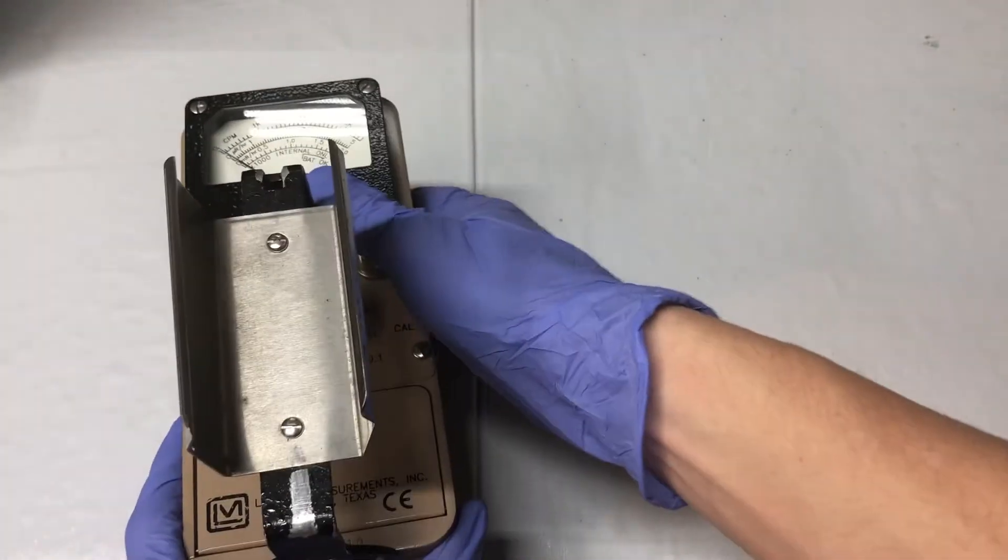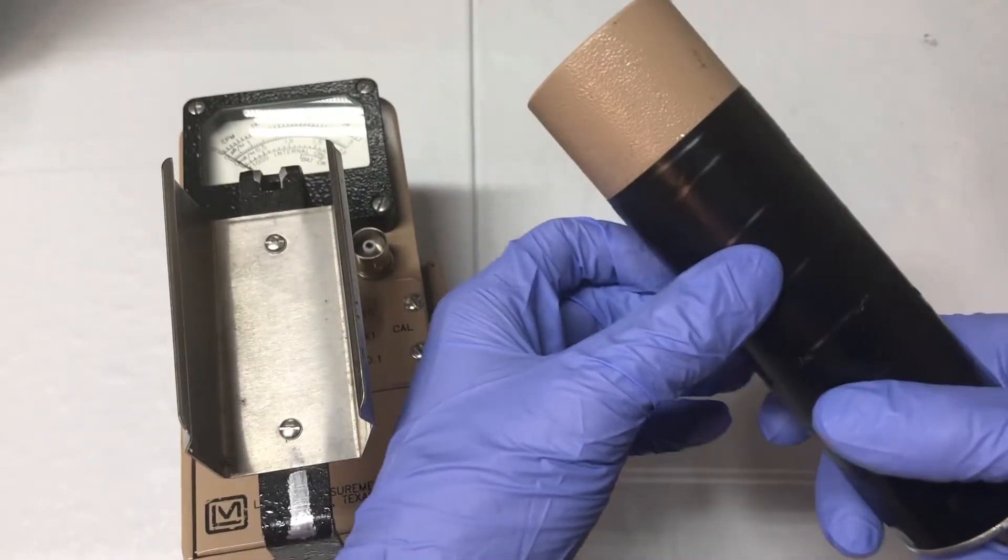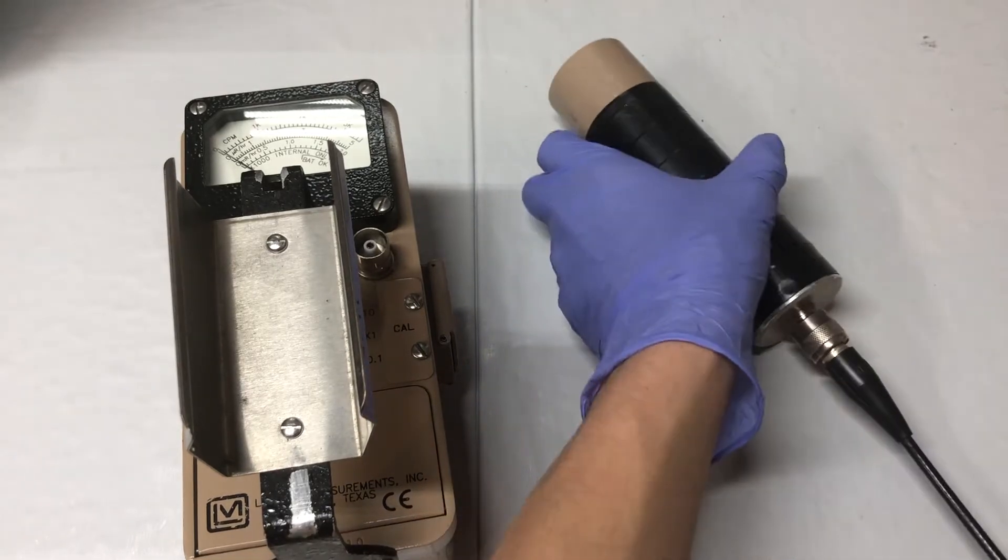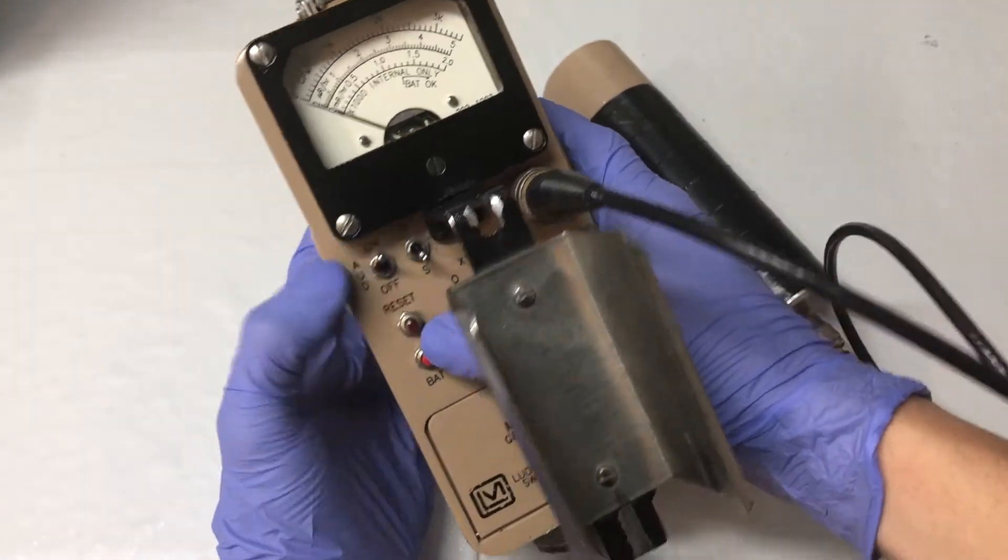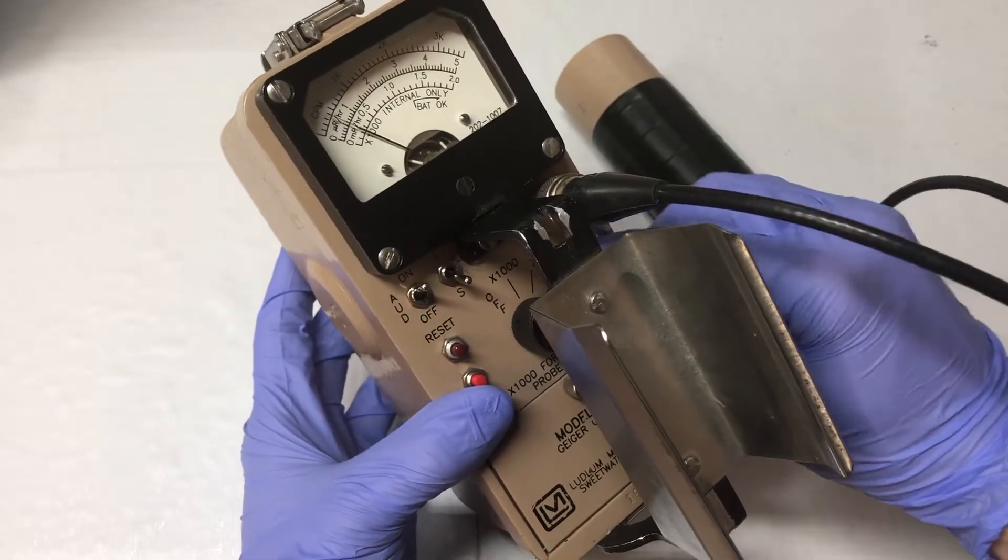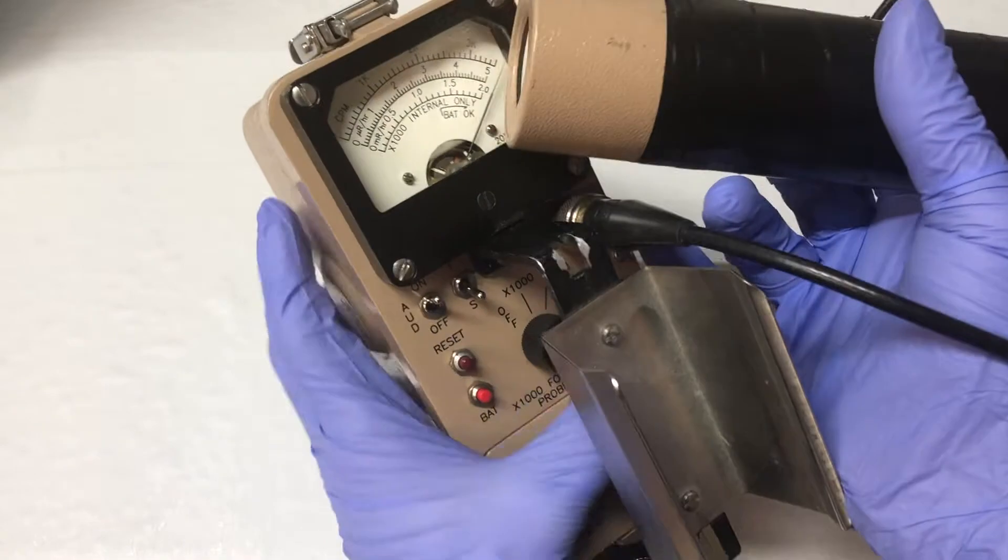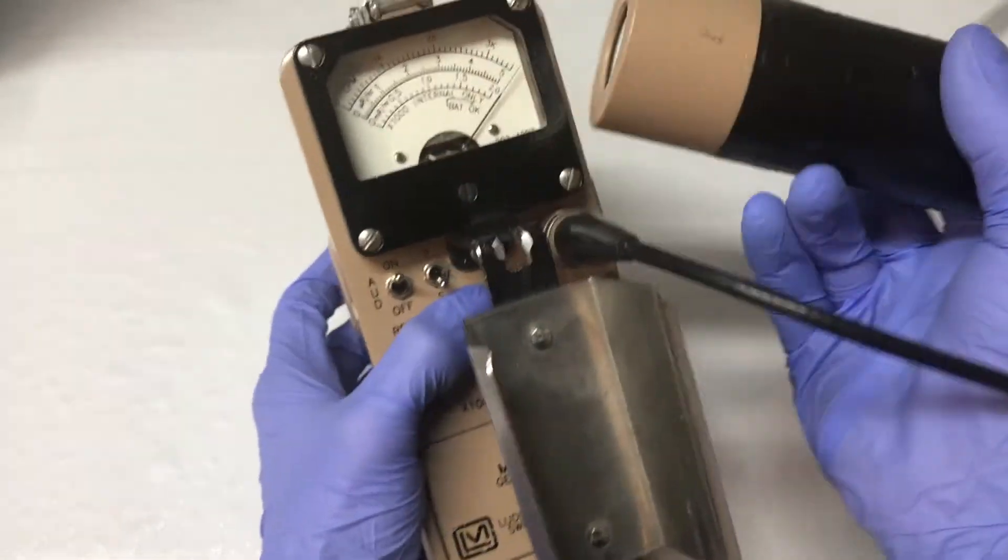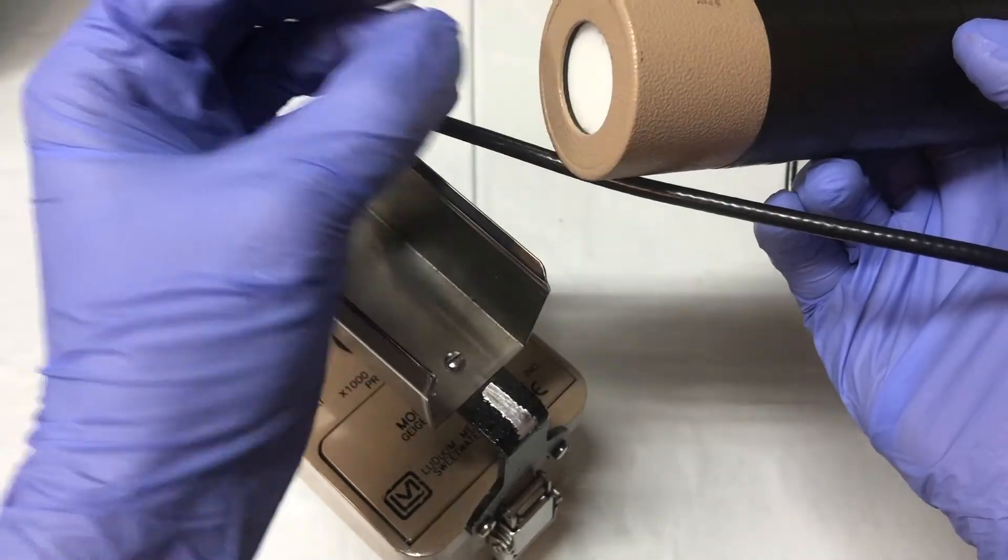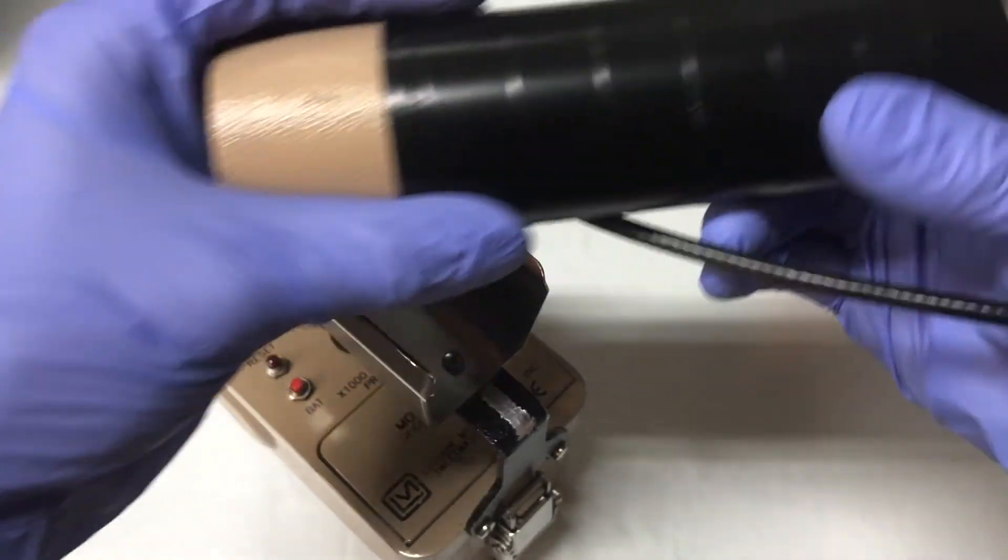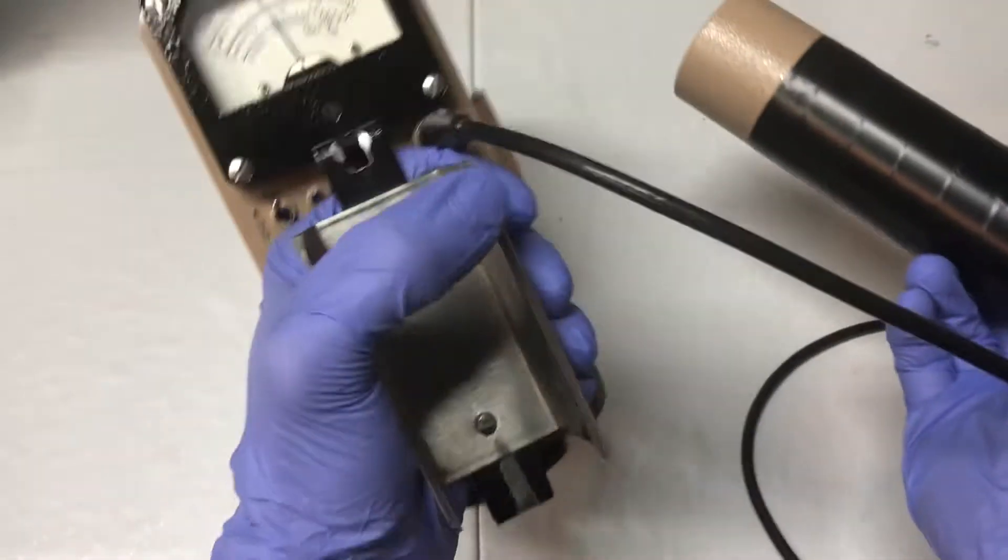Now let's hook up one of the detectors. This is the 44-3 which is a gamma scintillator. Turning it on to 0.01, you see that it maxes out already. A scintillator probe is very sensitive where it has a crystal which is sensitive to the radiation, and when it hits it causes that material to glow. Inside the scintillator there's a photomultiplier tube which takes each of those flashes of light and sends it to the meter.